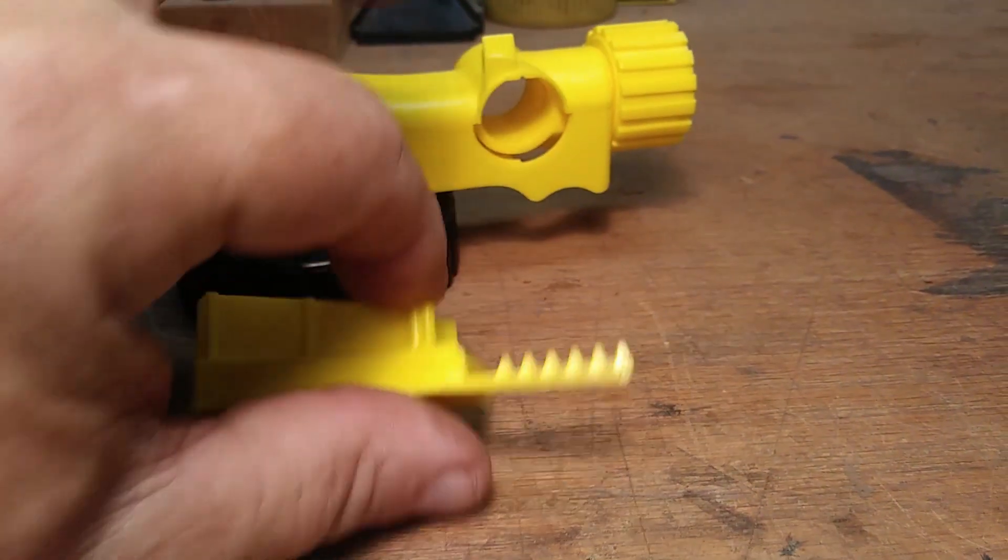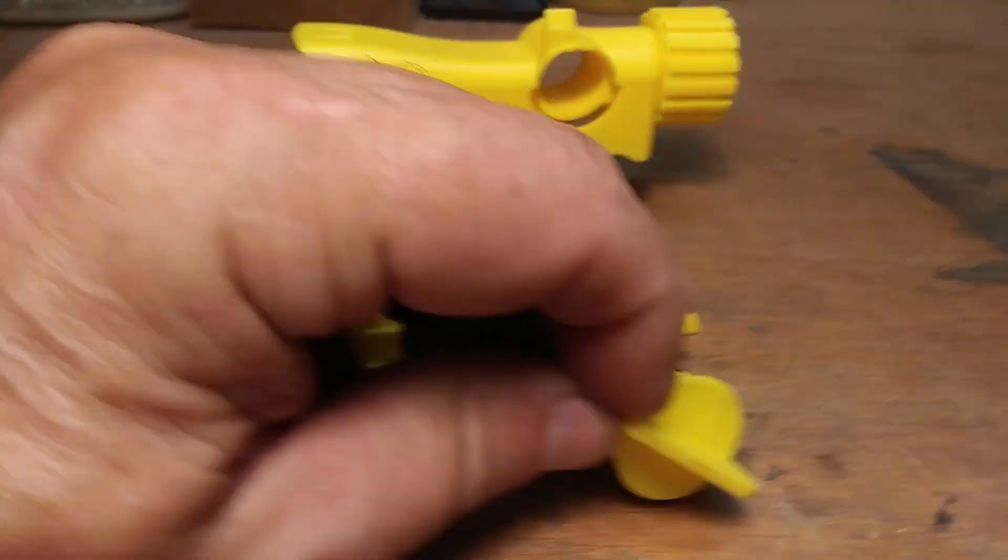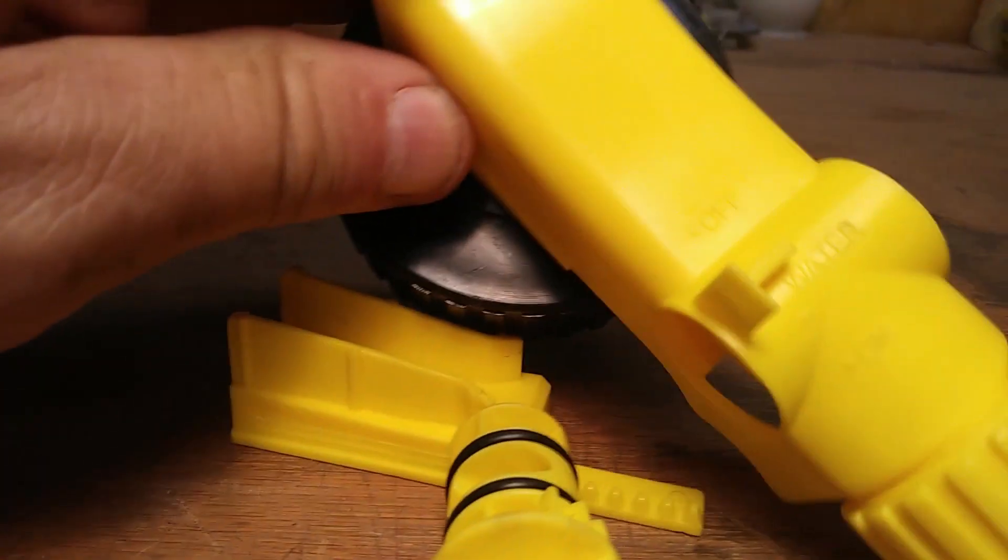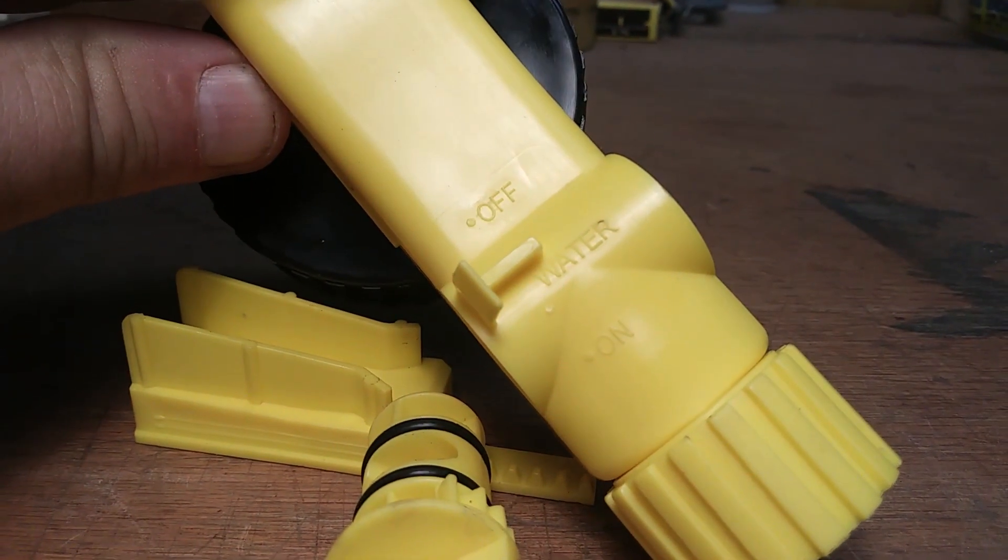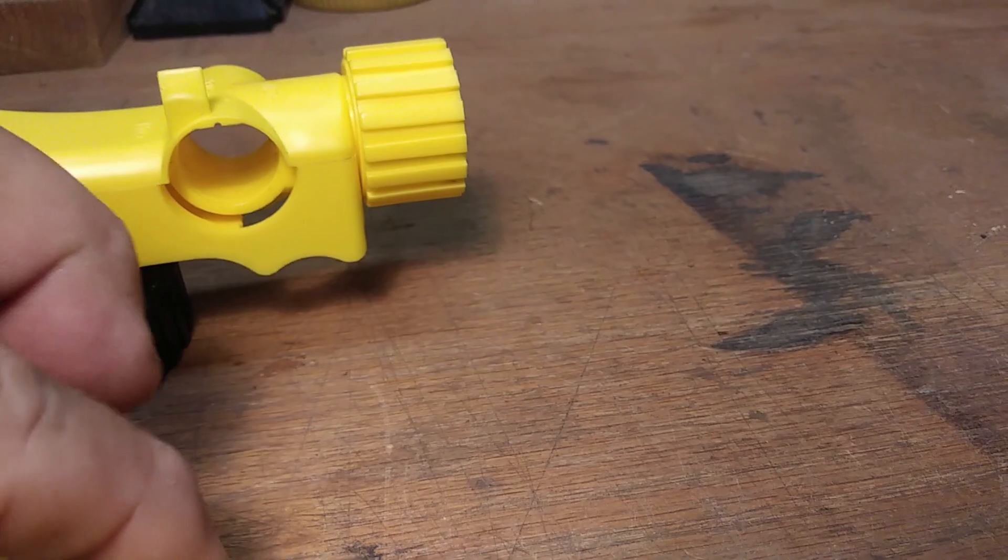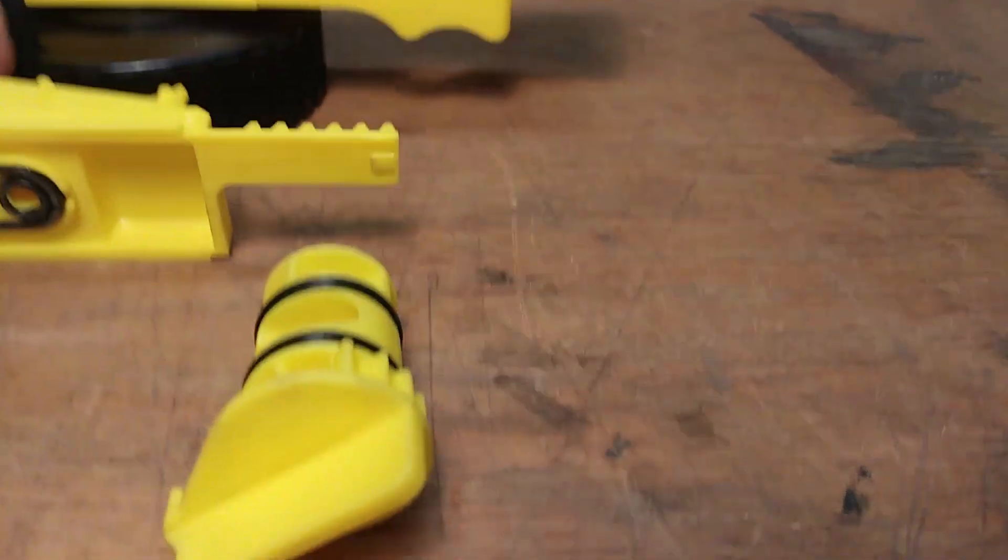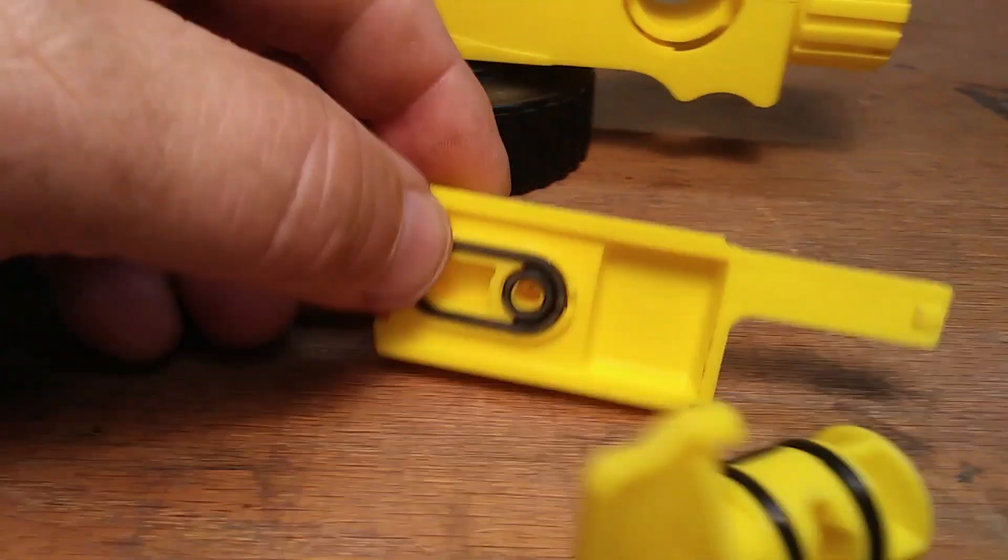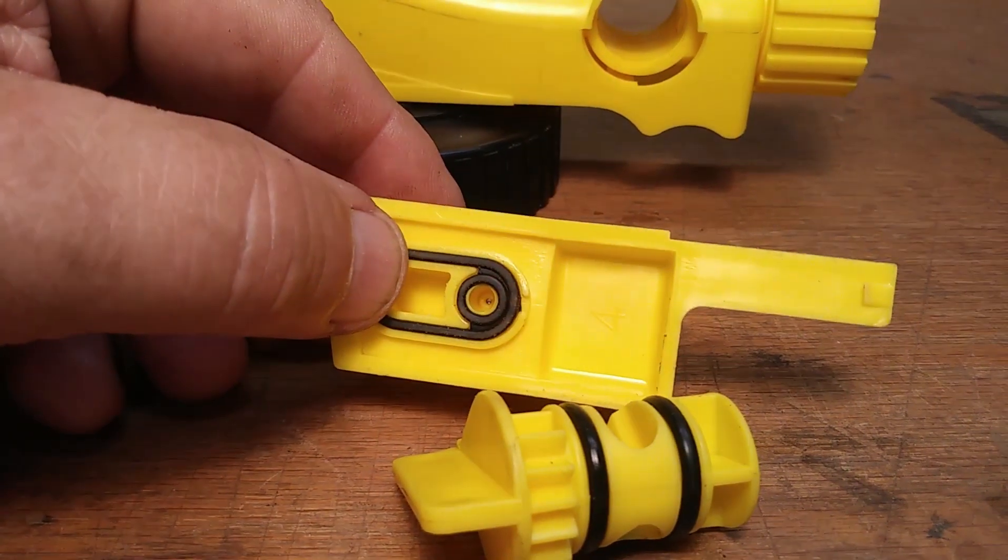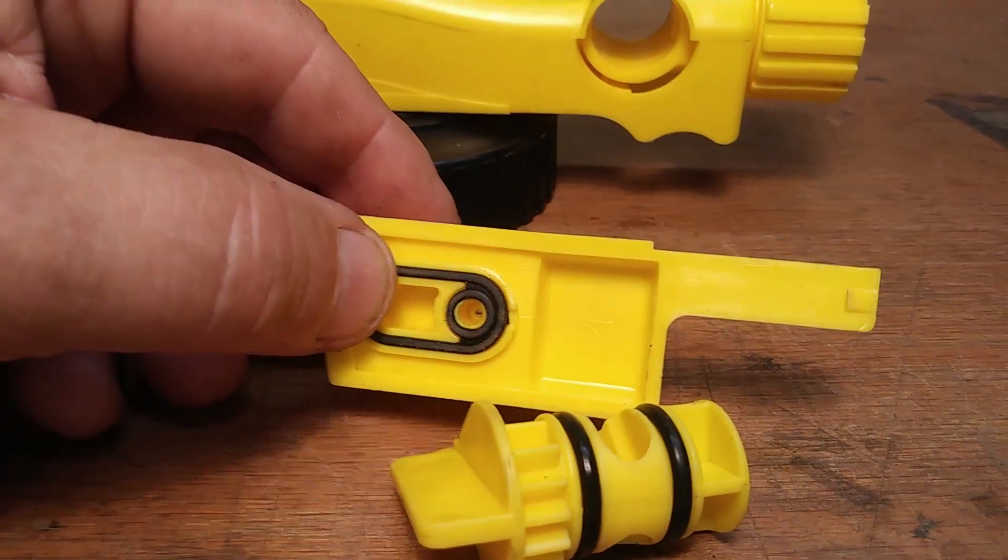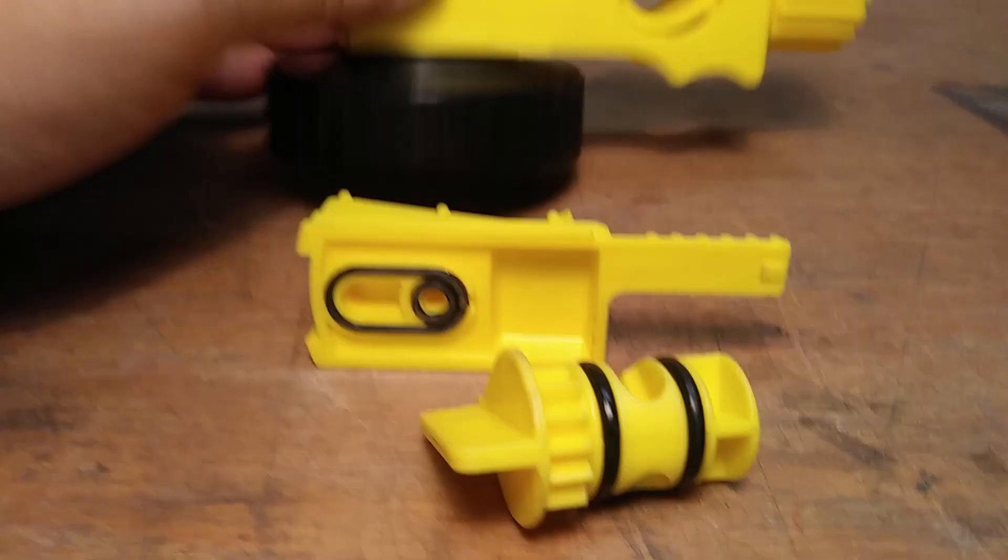When you turn the knob, maybe to about the halfway point, you'll end up hitting the water setting. That will not allow the pickup, but it will allow water to come through, putting water through the main channel but no pickup action going on.